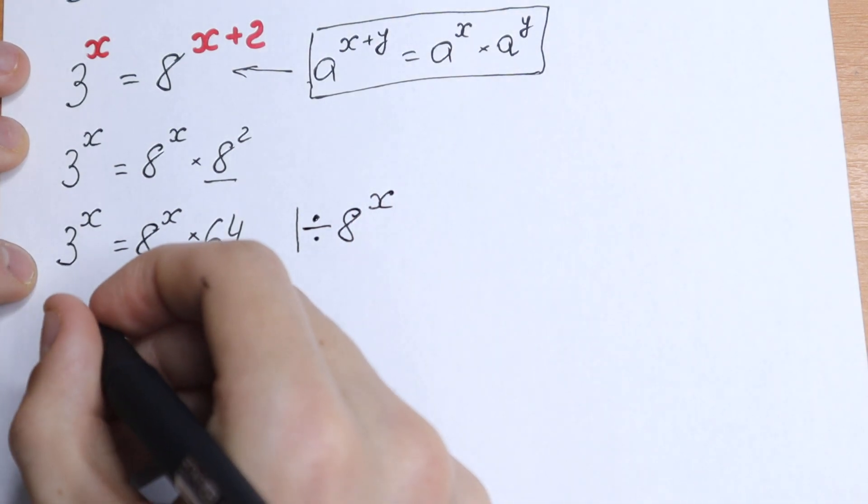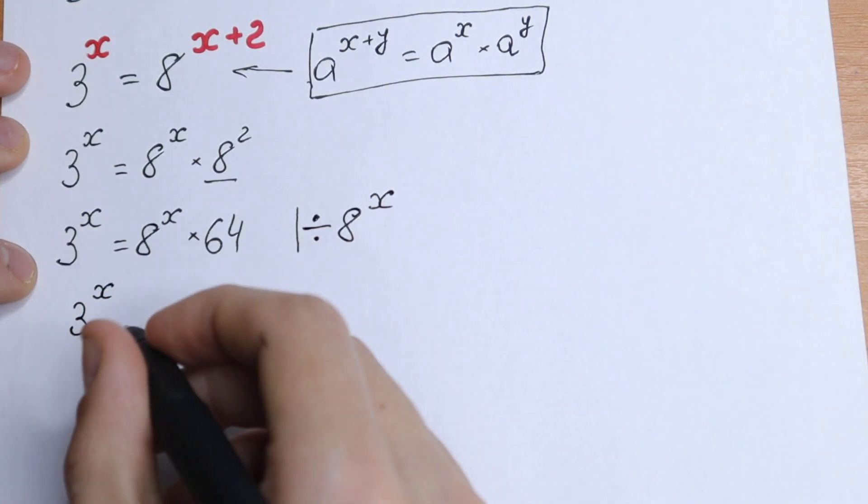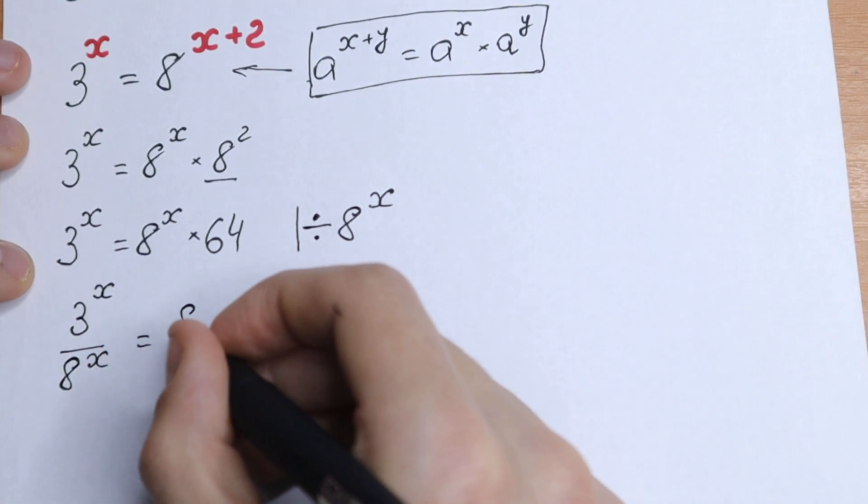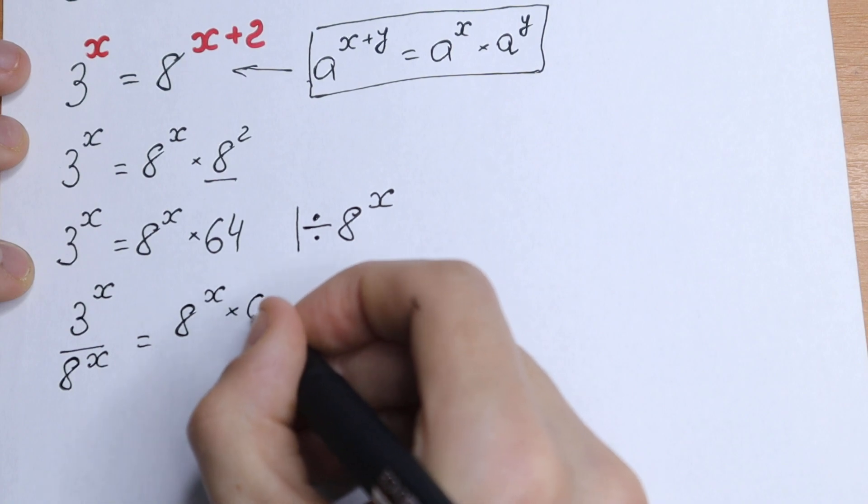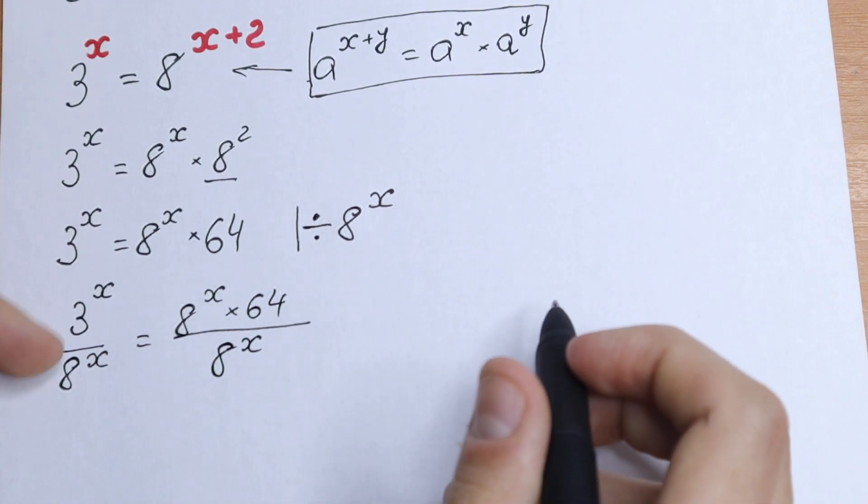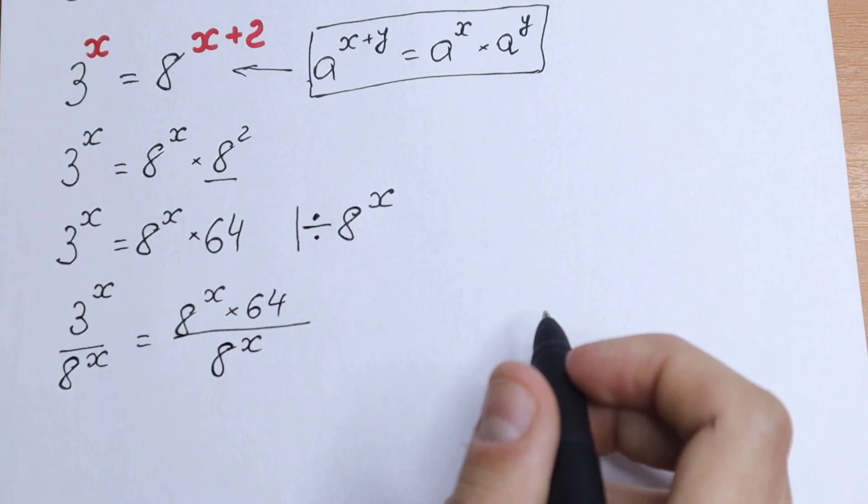What we will have? 3 to the power x divided by 8 to the power x equal to 8 to the power x times 64 divided by 8 to the power x. So we just divide both sides by 8 to the power x.